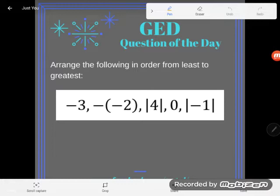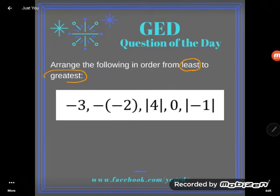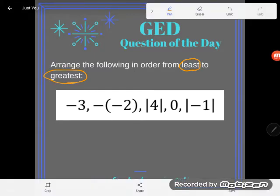Absolute value bars, they love the absolute value bars on those first five of the GED, and also negatives. You're probably going to see all those things, so let's take a look at this example here. It says, arrange the following in order from least to greatest. So I'm just comparing numbers here. I want to find the smallest thing to the greatest thing.